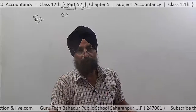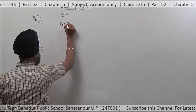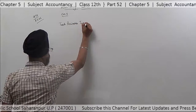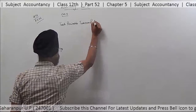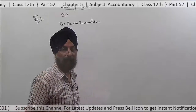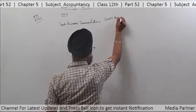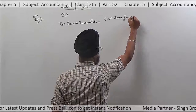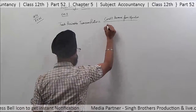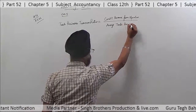See the trade receivables turnover ratio formula. Trade receivables turnover ratio equals credit revenue from operations upon average trade receivables.